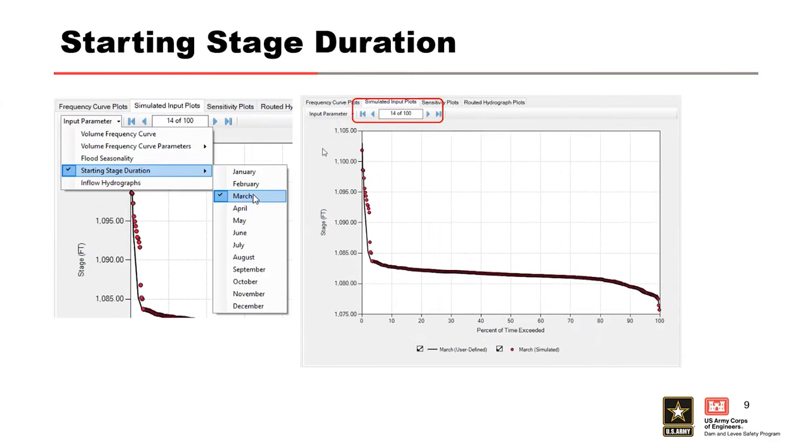The fourth type is the starting stage duration. The sample starting stage in the format of the stage duration curve can be viewed by month of each realization. The plot shows the stage versus the percent of time exceeded for each realization by month. The red points represent the sampled curve for each realization and the black solid line represent the user input starting stage duration. Hopefully, you're catching the black line as your user defined information and the red is the simulated. That's going to be the consistent theme here.